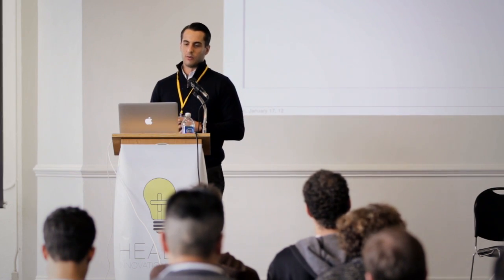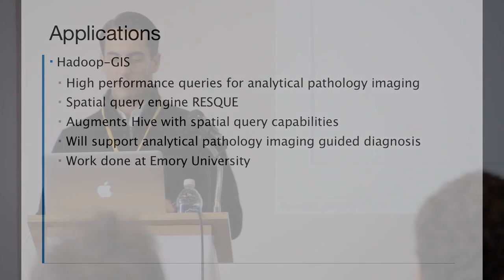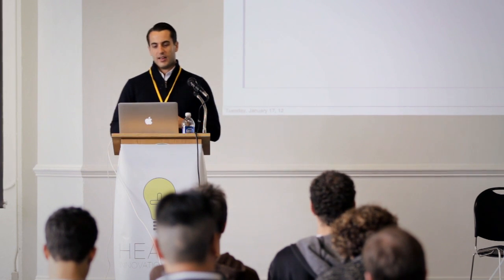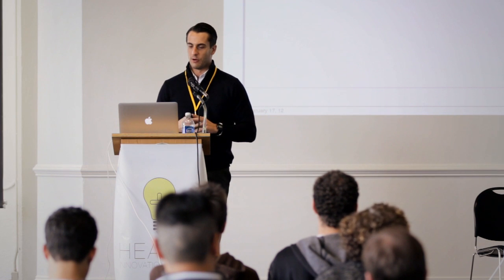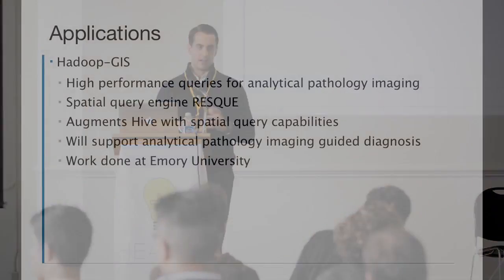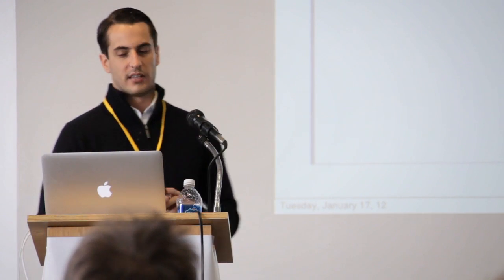Another interesting application involves image data. Genomics data is often thought of as a large volume of data to analyze in the medical space, but image data is just as high volume and there's probably even more of it out there today. Pathologists are highly paid people who look at images and discern what illness you might have — and it turns out computers are also very good at looking at images and discerning what might be going on. At Emory University they built an application called Rescue, which enhances the pathologist's ability to identify significant features of an image using data analysis.